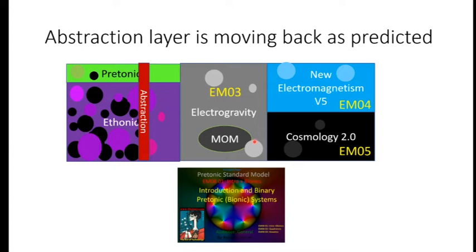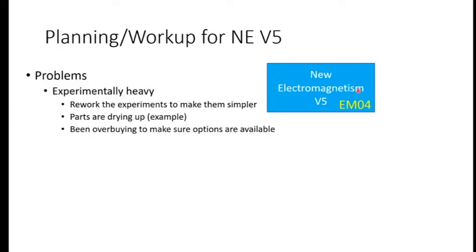The next thing on the list, now that electrogravity is done and we're moving the abstraction layer back, is we're going to produce new electromagnetism V5. I'm behind schedule on it, and one of the problems I'm running into is that electromagnetism V5 is going to be experimentally heavy — there are a lot of experiments we're going to have to run.